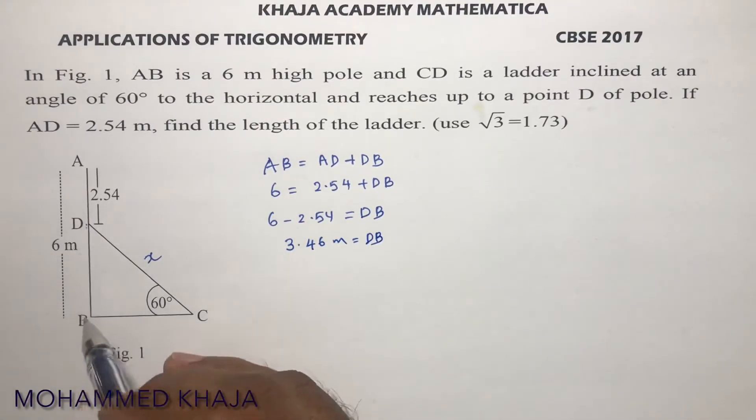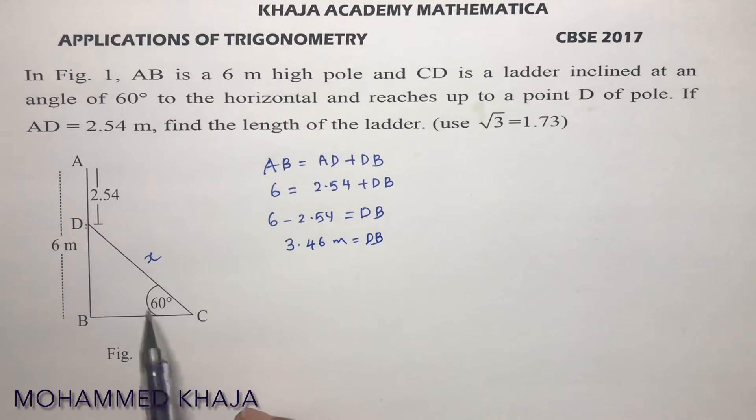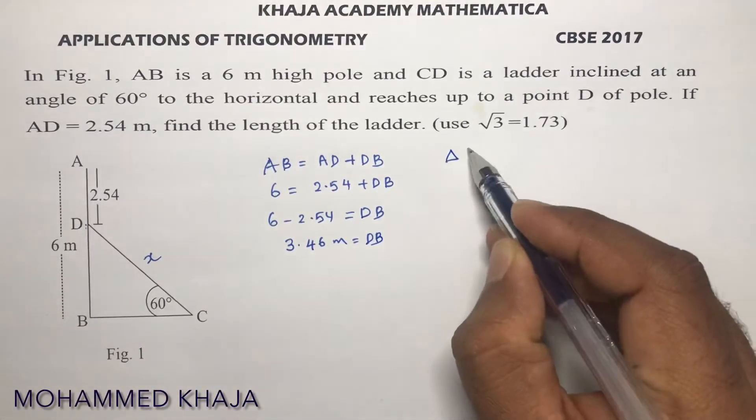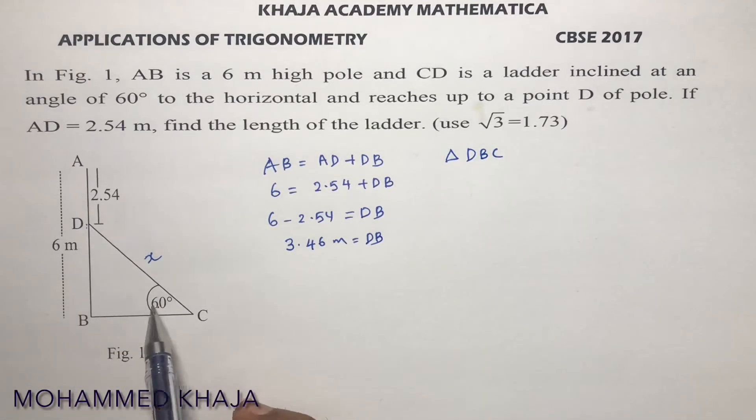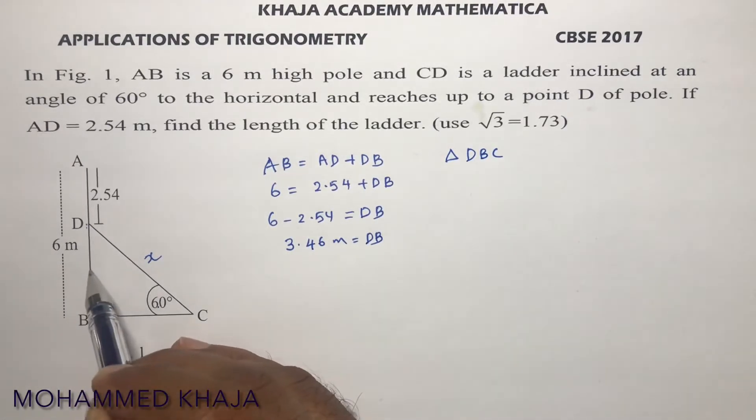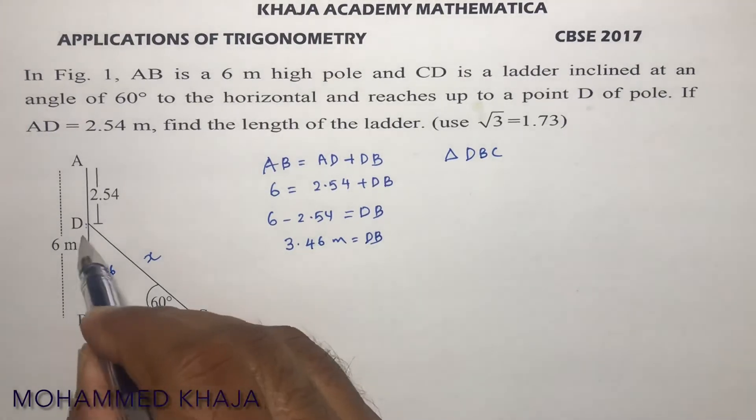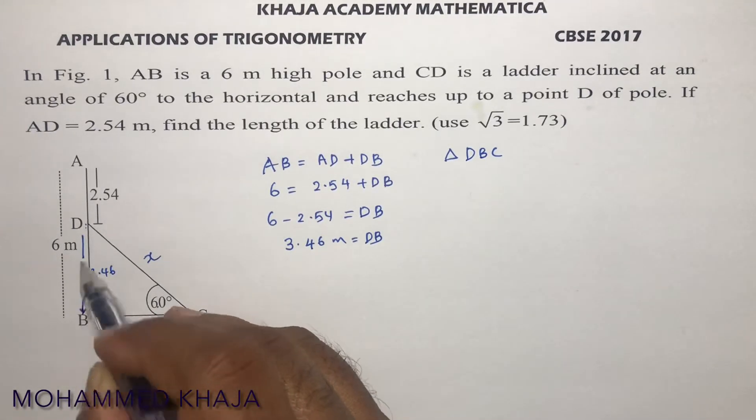So this DB value is 3.46. Now I need to find X. In triangle DBC theta, this opposite is DB which is 3.46.